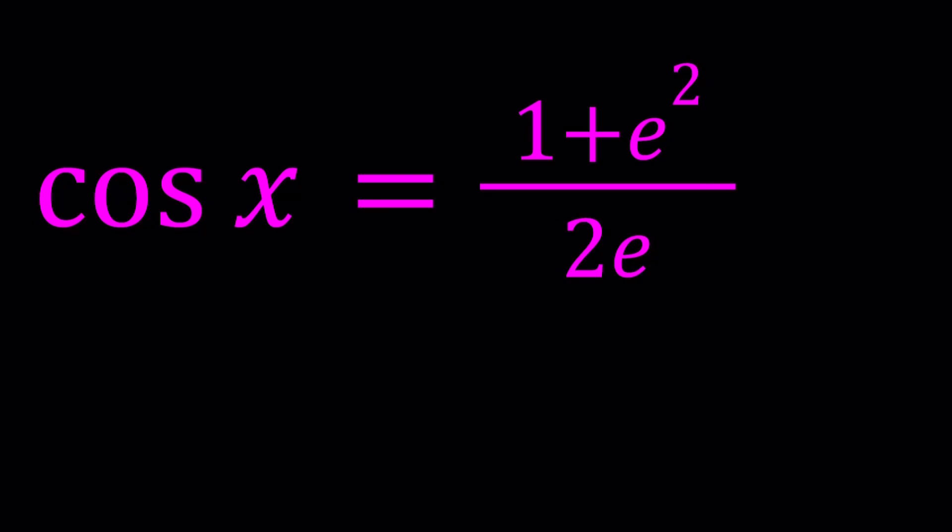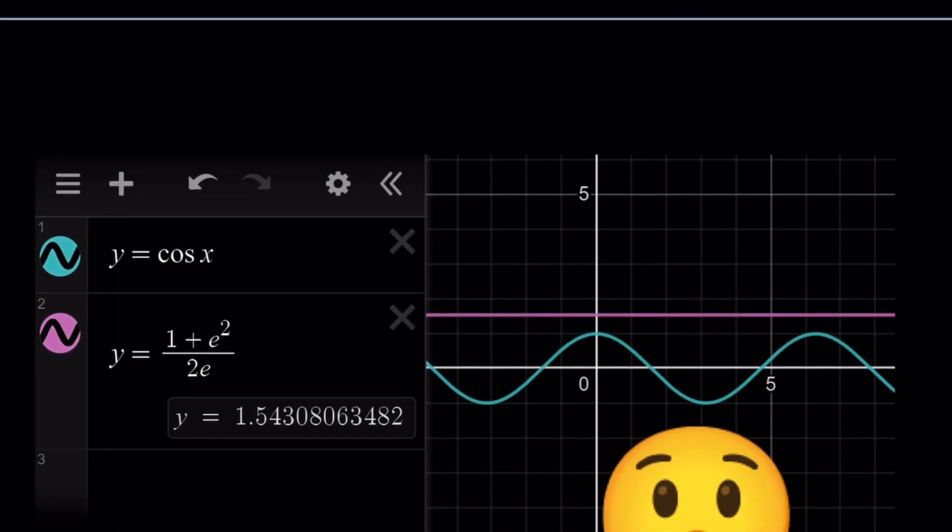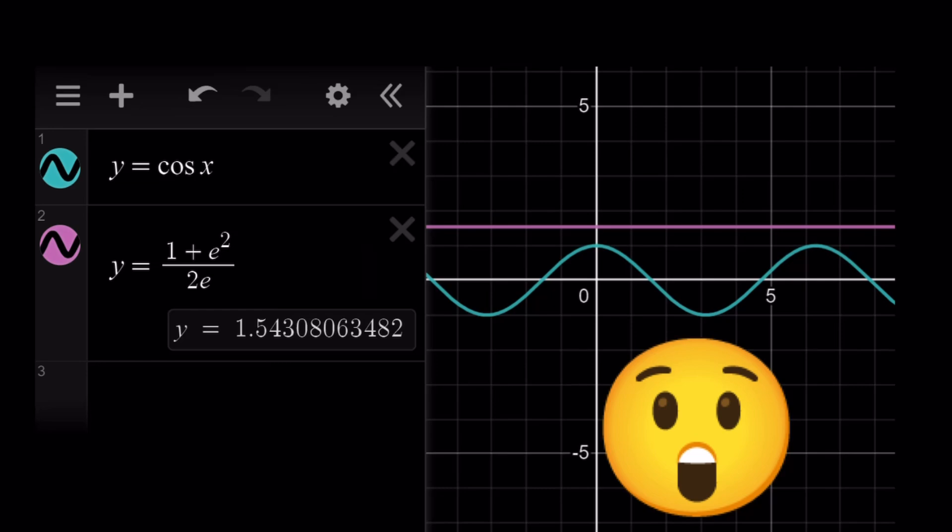But before we start solving this problem, I'm going to show you a graph of these two functions, one of which is a constant function and the other trigonometric. Let's take a look at the graph first because solving an equation can also be done graphically where you compare the graphs of two functions. If there's an intersection point, then you have some solutions. When you look at the graph of cosine x, you probably already know what that looks like, but the right hand side is a constant. So when you compare these two graphs, what do you notice?